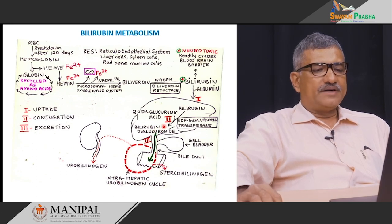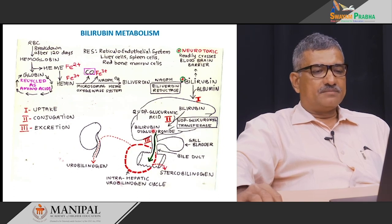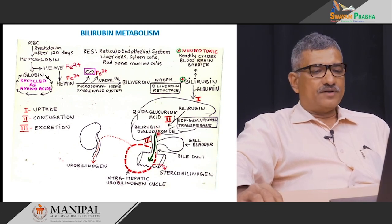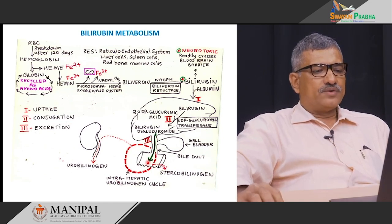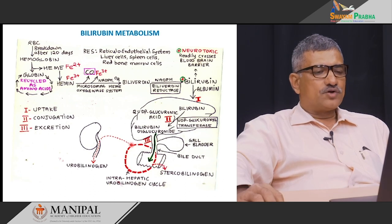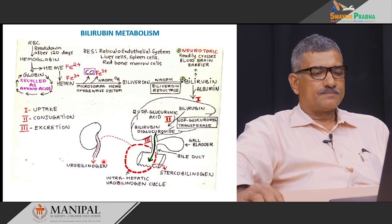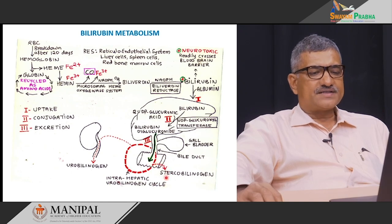The difference between bilirubin and bilirubin diglucuronide is in its solubility. Bilirubin is water insoluble but soluble in fat, whereas bilirubin diglucuronide is soluble in water. This conjugated form of bilirubin is then excreted into the intestine, where it is acted upon by intestinal bacterial flora and converted to urobilinogen. A considerably good amount of urobilinogen enters the intrahepatic urobilinogen cycle or enterohepatic portal circulation, and some amount is excreted in the feces as stercobilinogen.